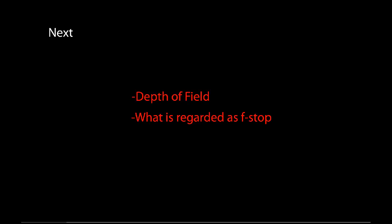That's basically everything covering all three elements. We've covered the ISO, the shutter speed, and the aperture. Next we're going to talk about the depth of field — what it is and how exactly you achieve it — and we're also going to run through what we call the f-stop, which a lot of people have heard about but may not fully understand. We'll cover all of that in the next video. Thank you for your time — I hope it wasn't a total waste. Bye-bye.